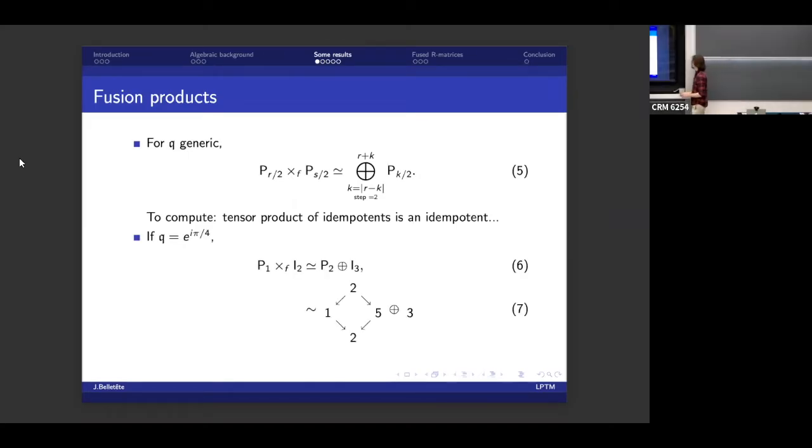But if q is the root of unity, however, things are more complicated. So in particular, if q is e^{i π/4}, and I try to fuse the projective of spin 1, the label is often referred to as the spin. So spin 1 projective with a simple module of spin 2, I get this lovely thing.